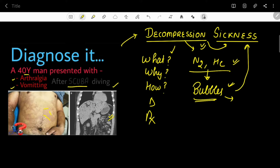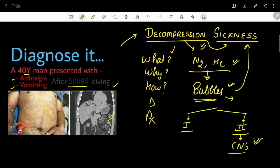Decompression sickness is classified as Type 1 and Type 2. When the CNS is involved, it is Type 2 disease. When the CNS is not involved, it is Type 1 disease. In Type 1, systems that can be involved include the skin, muscles, GIT, and other systems of the body. CNS involvement defines Type 2 decompression sickness.